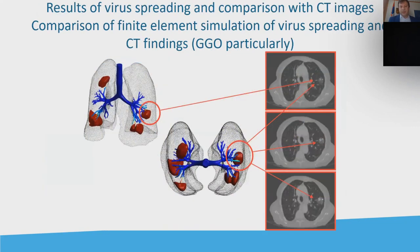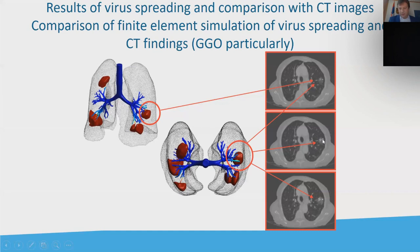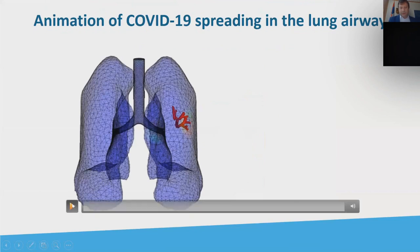The next is CT findings. In CT imaging, we can see the CT findings and also the spreading of the virus. You can see this is the original imaging — you can see the GGO, the small white area inside the lungs, and this is the simulation here. Just to show you the animation of how it's spreading.